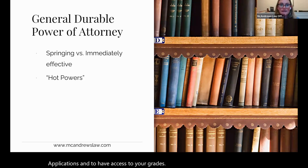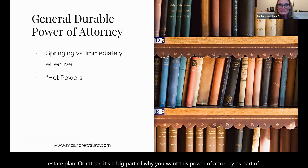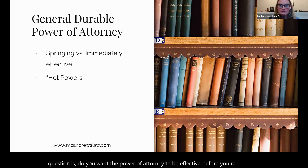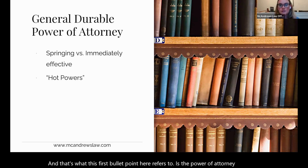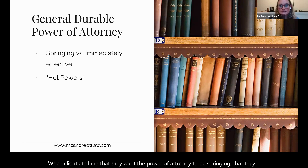Durable means that the power of attorney lasts beyond your incapacity — it will be effective even when you cannot make and communicate decisions for yourself. The bigger question is: do you want the power of attorney to be effective before you're incapacitated? Is it immediately effective upon signing, or is it only effective — what we call a springing power of attorney — once you are determined to be incapacitated? When clients tell me they want it to be springing, I bring up two considerations: one substantive and one procedural.